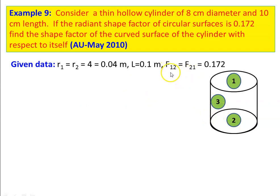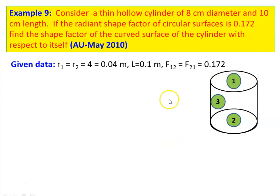The given data: shape factor between the circular surfaces F12 = F21 = 0.172. We have to calculate the shape factor of the curved surface with respect to itself, that is F33.